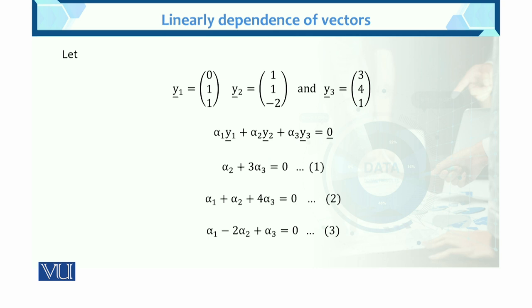Here is another example. y1, y2, and y3 are new vectors in three dimensions. We set up: alpha 1·y1 + alpha 2·y2 + alpha 3·y3 = 0. From the first row, equation 1 gives: 0·alpha 1 + 1·alpha 2 + 3·alpha 3 = 0. Similarly, equations 2 and 3 are determined from the other rows.